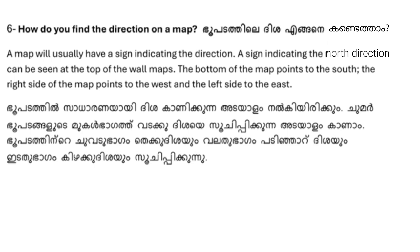A sign indicating the north direction can be seen at the top of wall maps. The bottom of the map points to the south, the right side of the map points to the west, and the left side to the east.